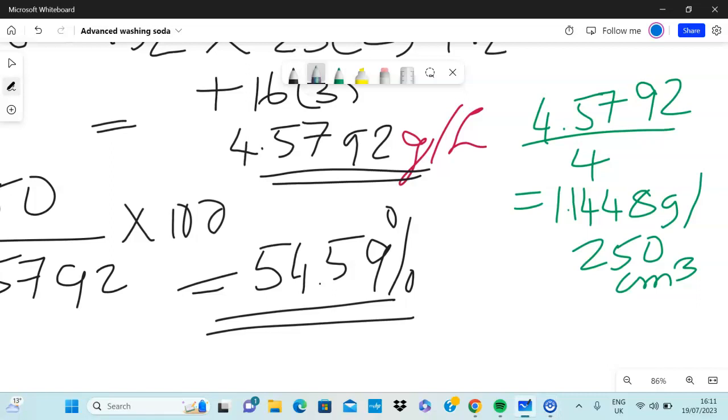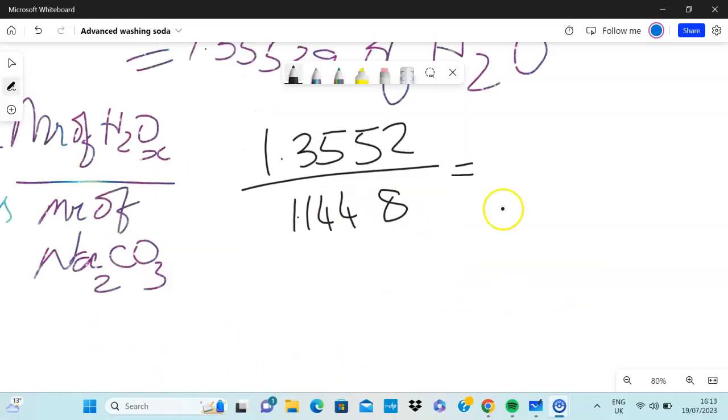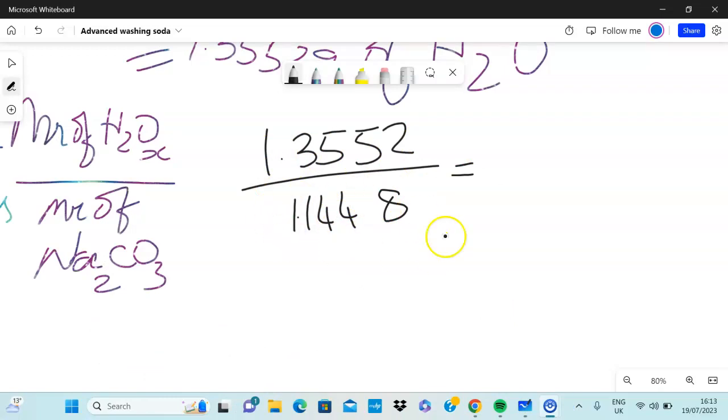How do you find the mass of water? We do know the total amount of crystals add up to 2.50, so I just have to take away the anhydrous to get the amount of water in that program. That gives me 1.3552 grams of H2O. That's the mass of H2O in this question. I'm going to write that down - that's the mass of water over mass of anhydrous sodium carbonate per 250.